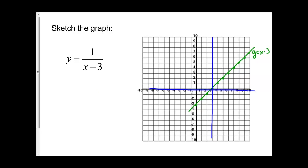My next step is to find my invariant points. Invariant points are always at y equals 1 and y equals negative 1. I go over at y equals 1 until I hit my graph — one invariant point is right there. I do the same thing at negative 1 and draw my invariant point. Now I can draw in my function: it goes up to the invariant point and over to the other asymptote on each side.